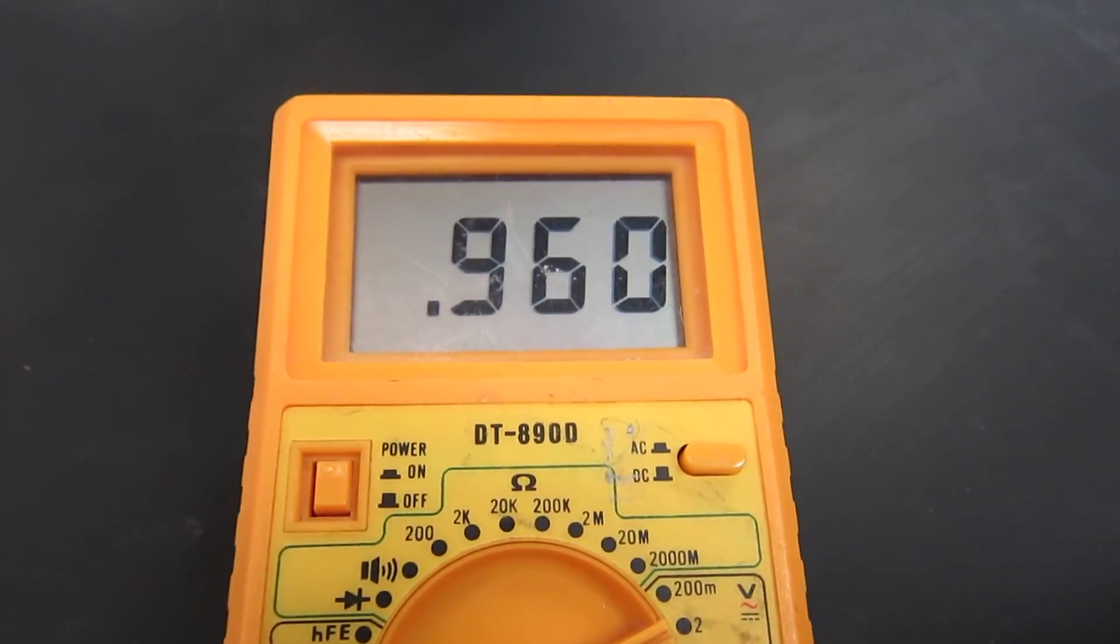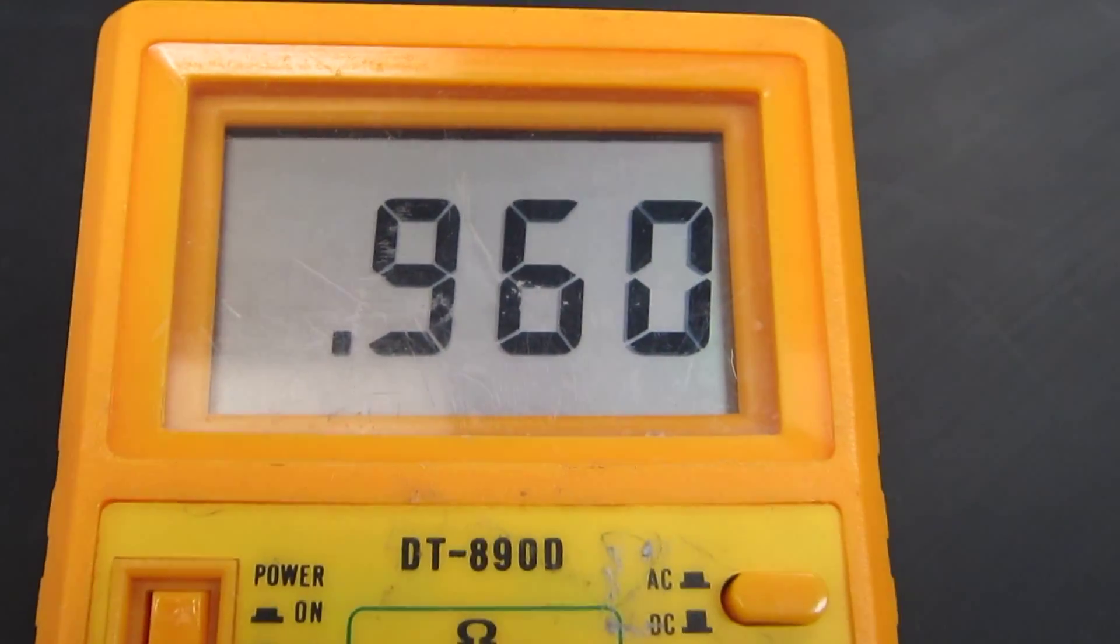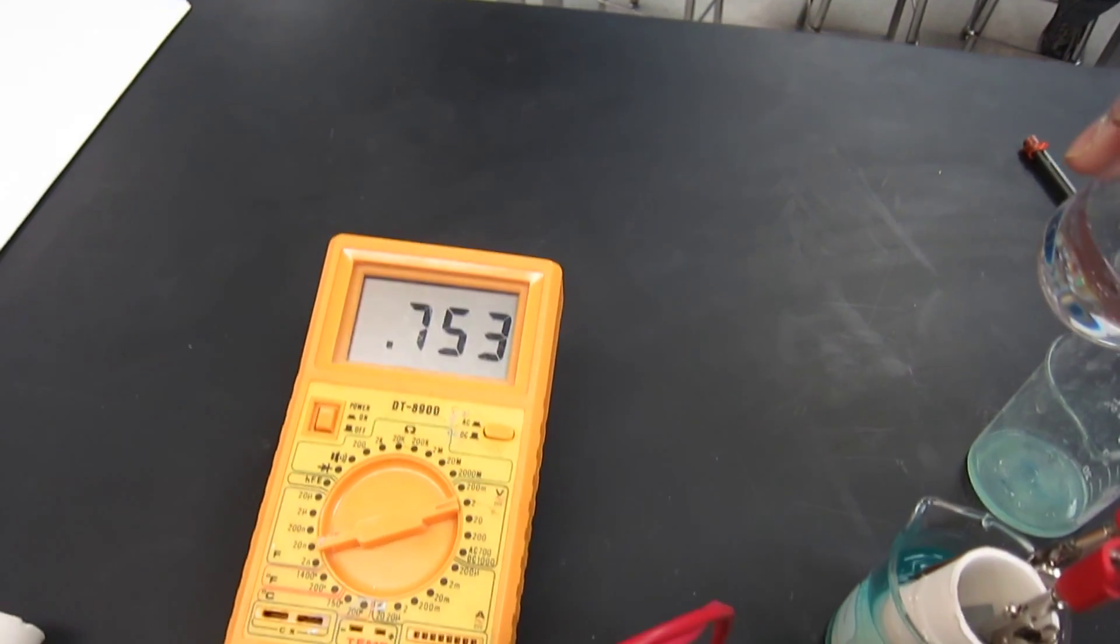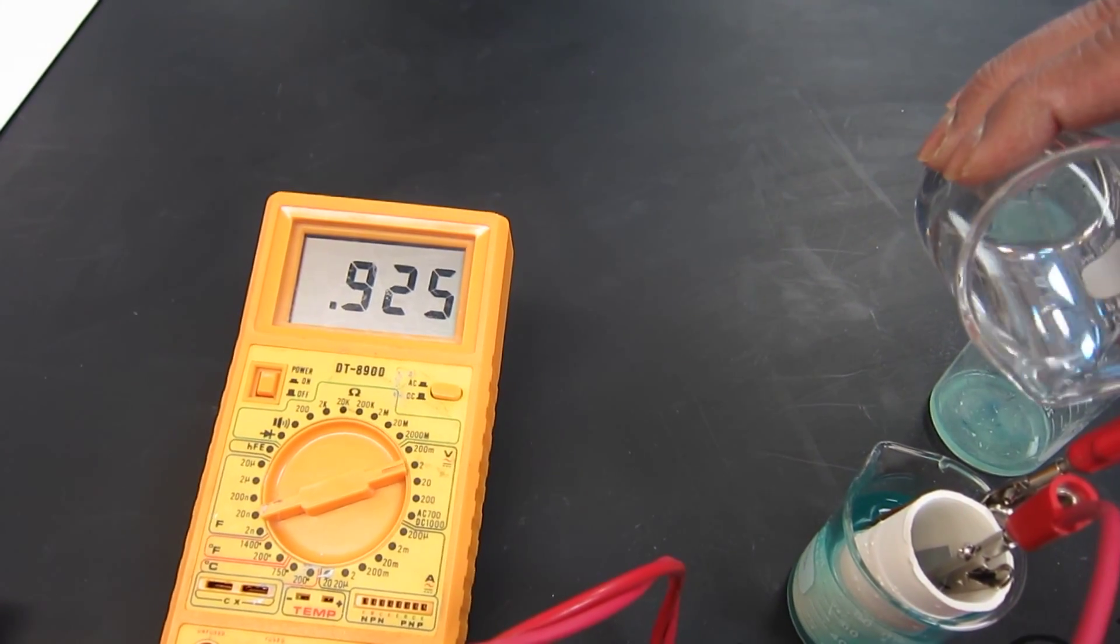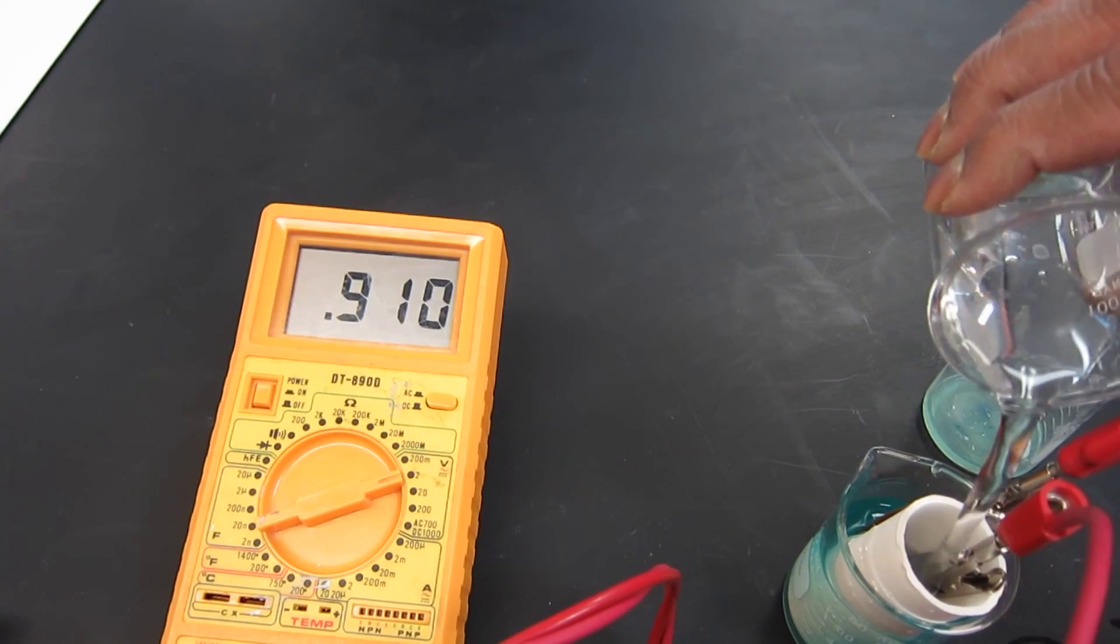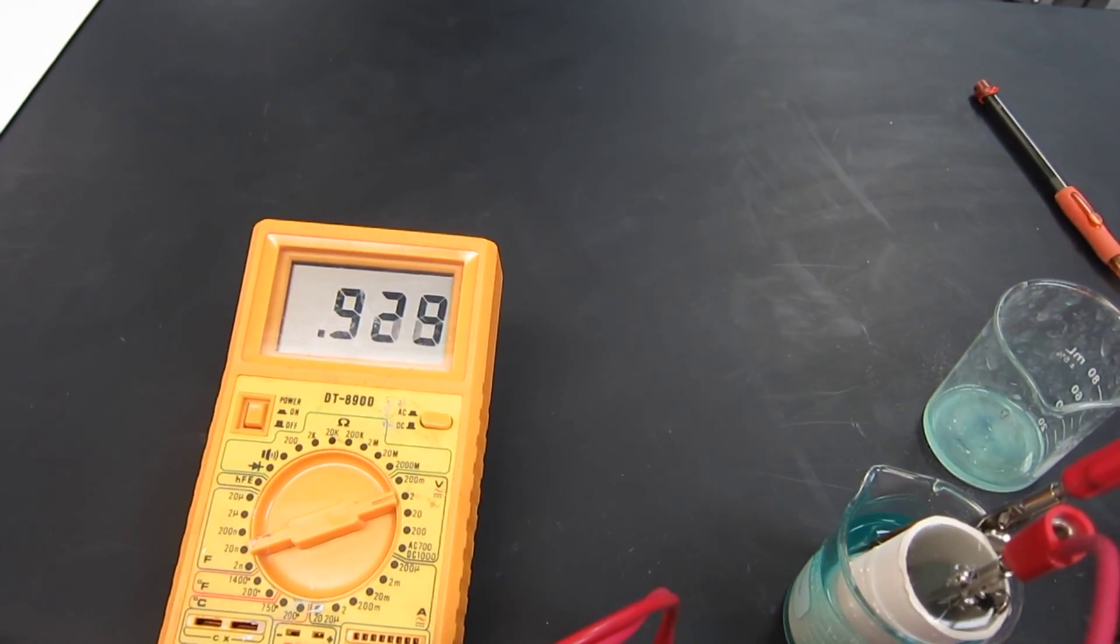First take the reading of 1 molar concentration copper sulfate with 1 molar concentration zinc sulfate. Record the value. Repeat the process until you have taken the readings for all 5 concentrations.